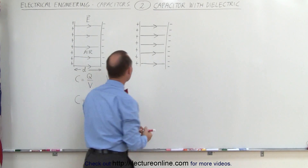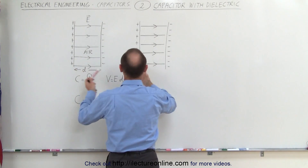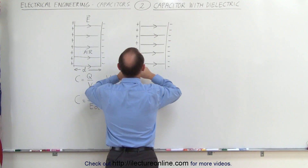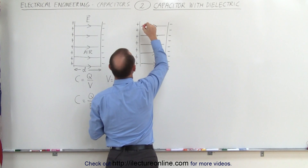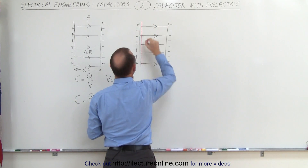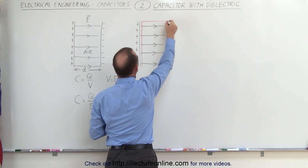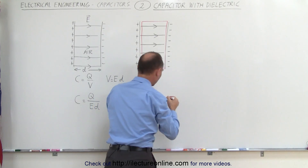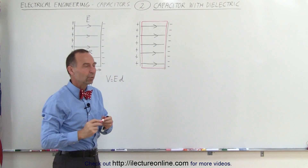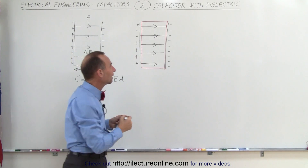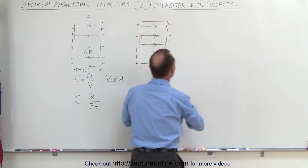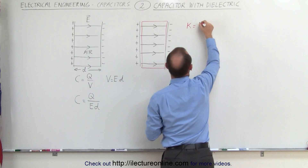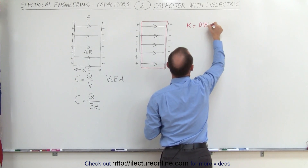So here we have another capacitor — same dimensions, same amount of charge on the capacitor. But now what we're going to do is place a dielectric between the plates. A dielectric will have a certain dielectric constant, which is denoted by the letter K.